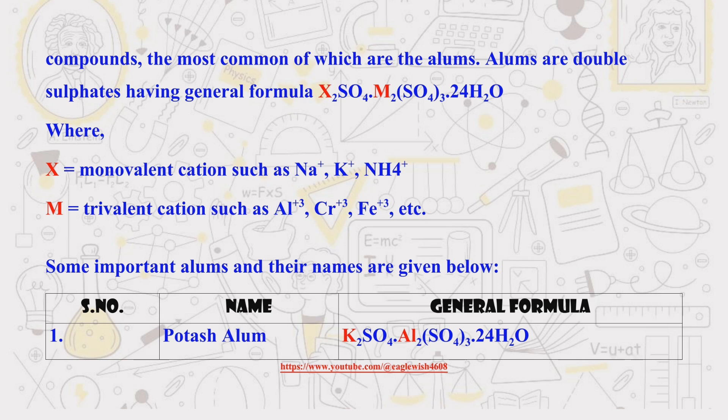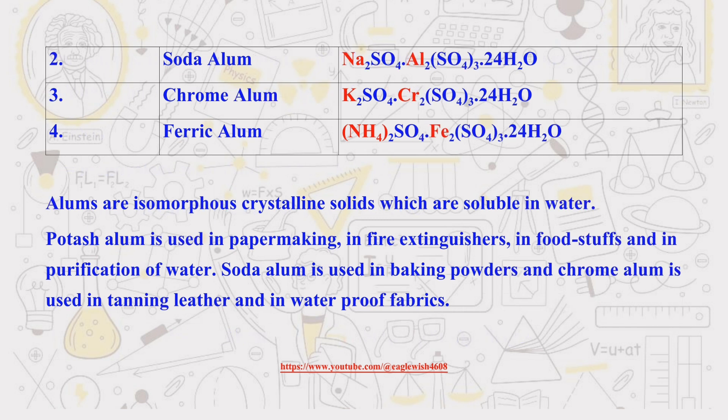One of the most common recycled aluminum products is alum, which is a type of double sulfate. It might surprise you to know that there are actually several different types of alum. Some of the most common are potash alum, soda alum, chrome alum, and ferric alum.